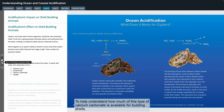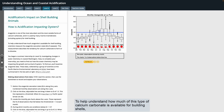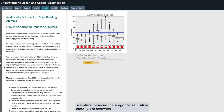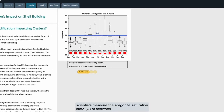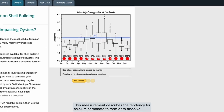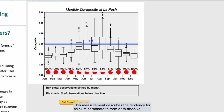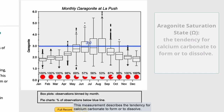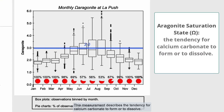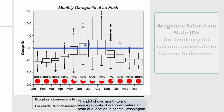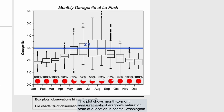To help understand how much of this type of calcium carbonate is available for building shells, scientists measure the aragonite saturation state of seawater. This measurement describes the tendency for calcium carbonate to form or to dissolve. This plot shows month-to-month measurements of aragonite saturation state at a location in coastal Washington.